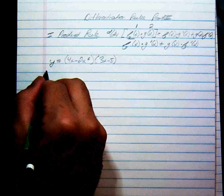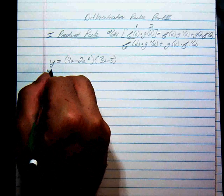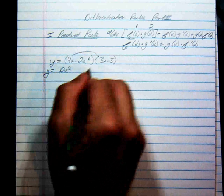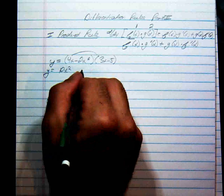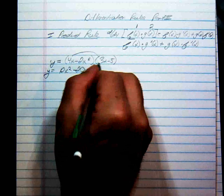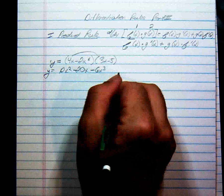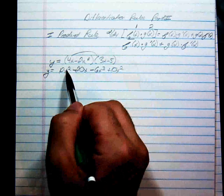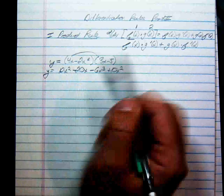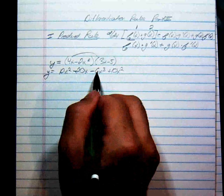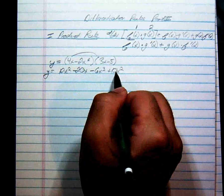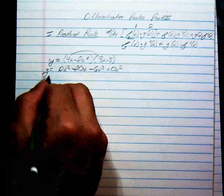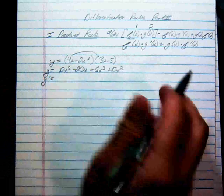Normally you don't necessarily need the product rule for this because you could FOIL all this out. If I wanted to do it without the product rule, y would equal 12x squared minus 20x minus 6x cubed plus 10x squared. Let's verify: 4x times 3x is 12x squared, 4x times negative 5 is negative 20x, negative 2x squared times 3x is negative 6x cubed, and negative 2x squared times negative 5 is positive 10x squared.